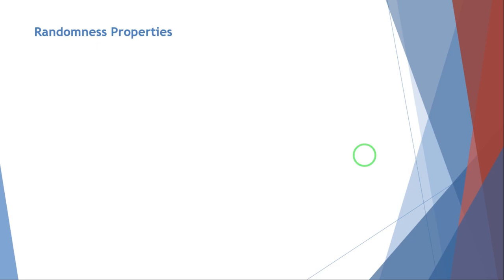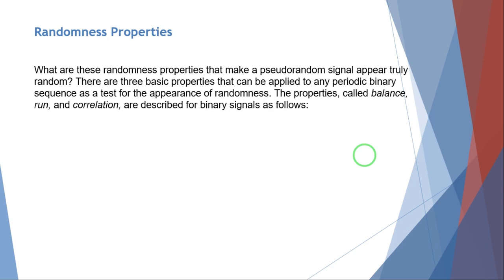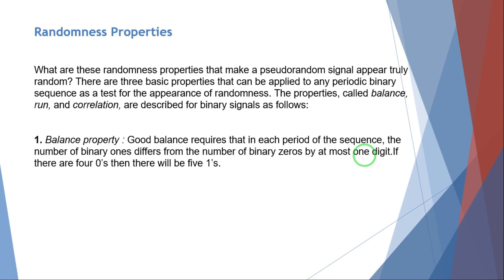After understanding the pseudo-noise generator, let's look at its properties. There are three basic properties applied to any periodic binary sequence as a test for the appearance of randomness: balance, run, and correlation. The balance property requires that in each period of the sequence, the number of binary ones differs from the number of binary zeros by at most one digit — so the number of ones is always one more than the number of zeros in each period of a maximum length sequence.